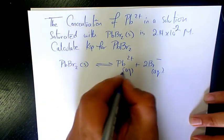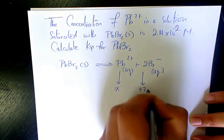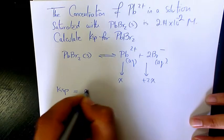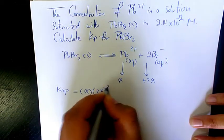So here that's produced X. This one is going to produce 2X. So Ksp will be X to the power of 1 times 2X to the power of 2.